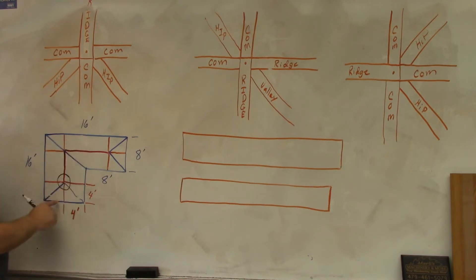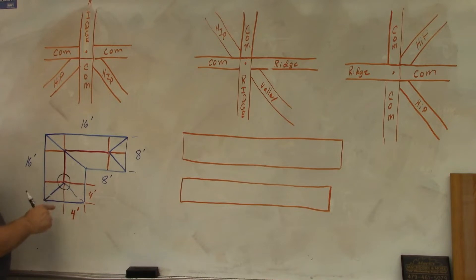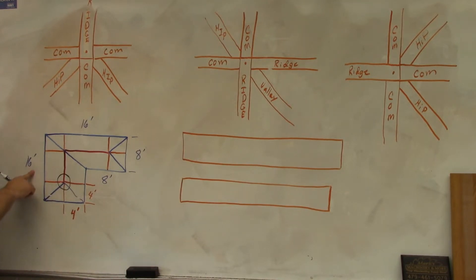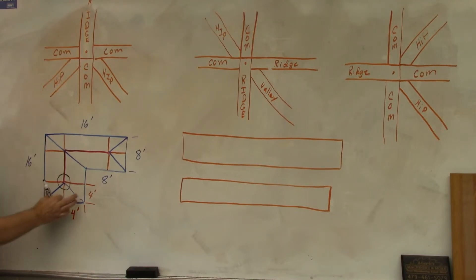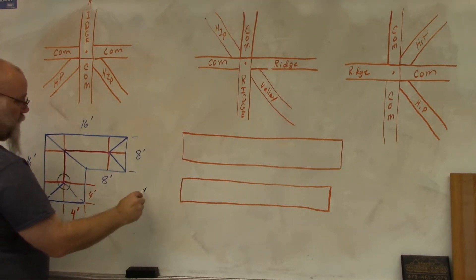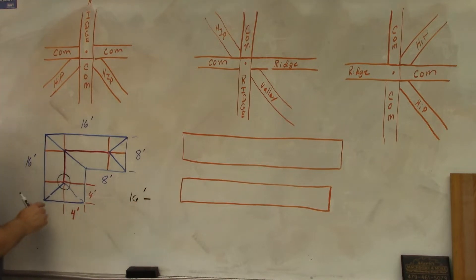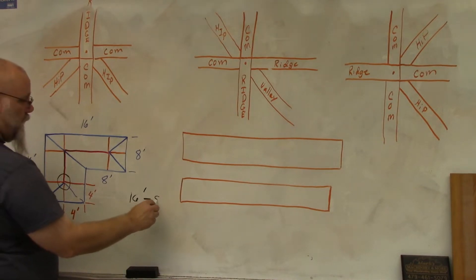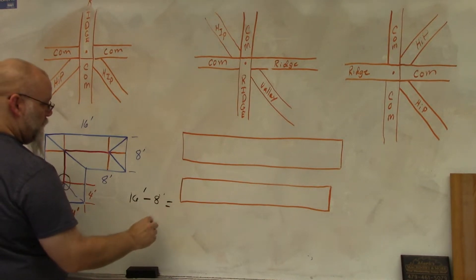To figure out this rafter length, you're going to take the length of the structure — it's 16 feet from here to here because I've got hips on both ends that are the same. So I have 16 feet, and then I'm going to subtract the width of the building, which is the span. I subtract 8 feet, which gives me 8 feet.